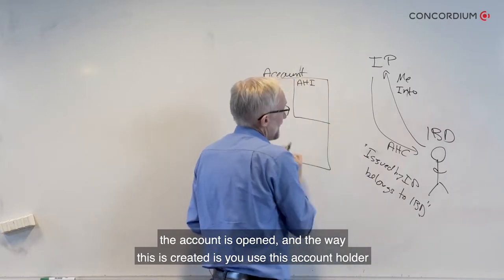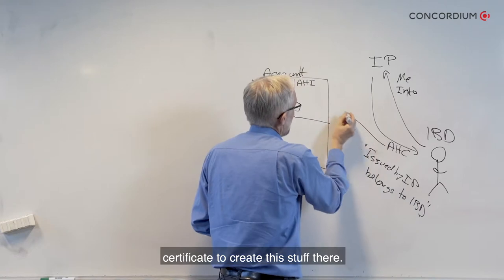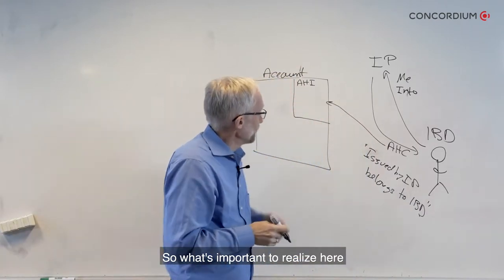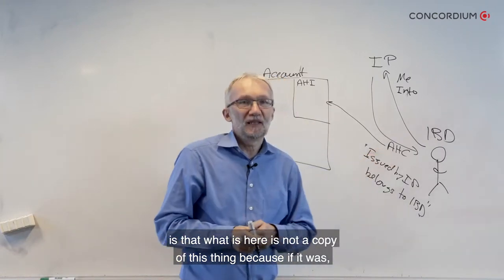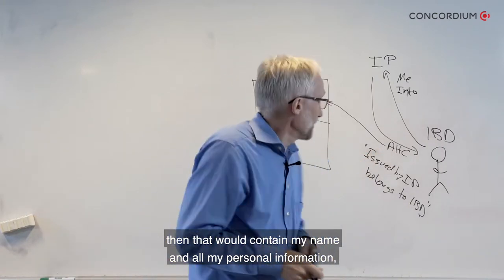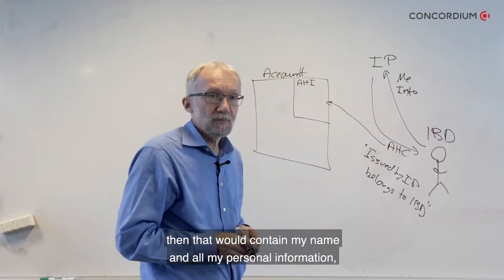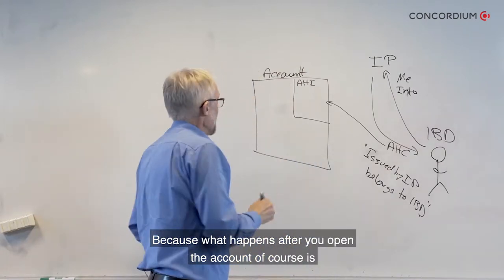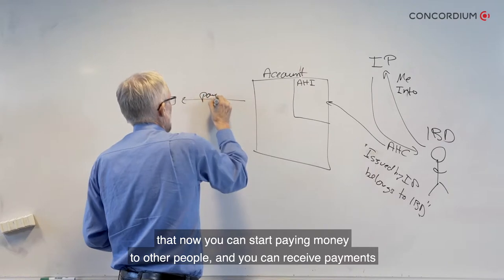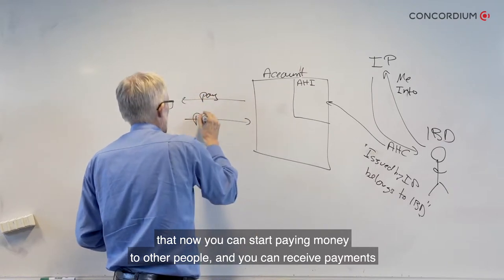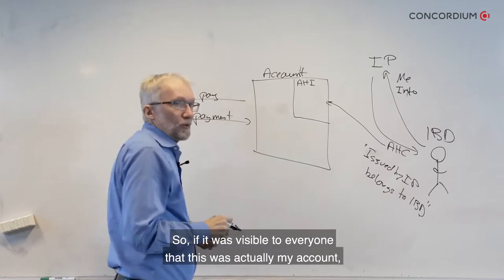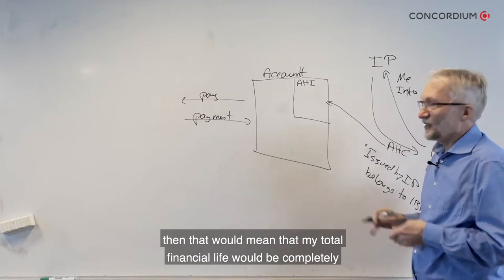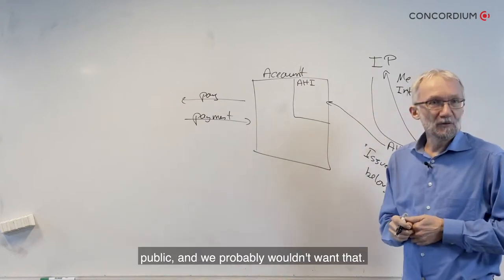The way this is created is you use the account holder certificate to create this account information. What's important to realize is that what's in the account is not a copy of the certificate, because if it were, it would contain your name and all your personal information. This would not be good for privacy, because after you open the account you start paying money to other people and receiving payments — and if it were visible to everyone that this was actually your account, your entire financial life would be completely public.